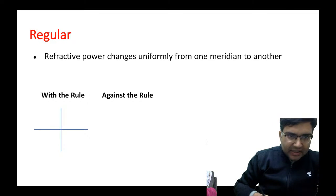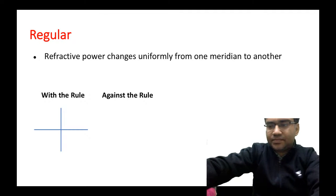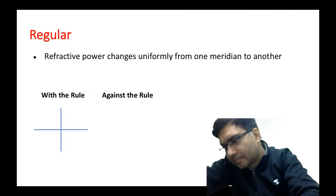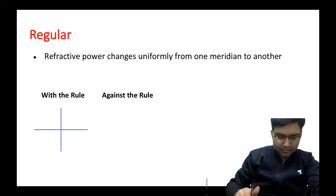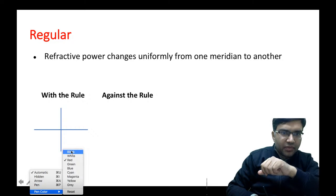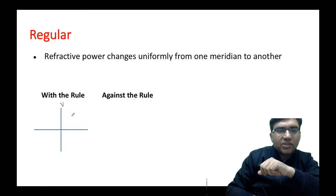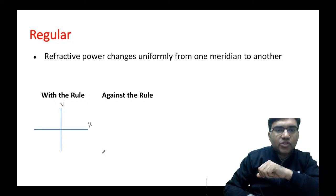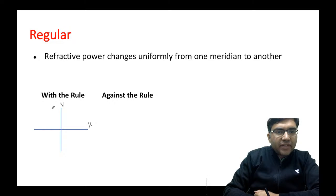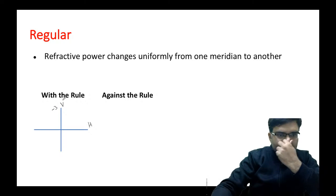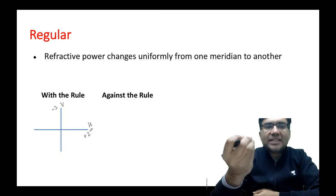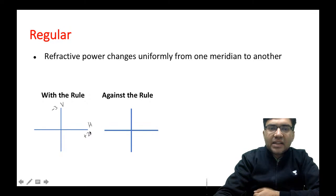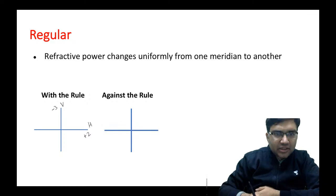For example, in with-the-rule astigmatism: this is your vertical meridian and this is your horizontal meridian. We have one power in the vertical meridian — let's say minus 3 — and a different power in the horizontal meridian — say plus 2. This is called with-the-rule astigmatism.